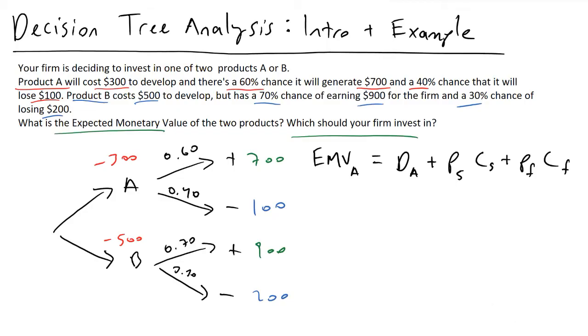If we plug in these numbers, what I'll have is that the development costs of A is going to be minus 300. And then the probability of success for A was 0.6 or 60%. And then the cost of success here was $700. That's positive 700. And then the probability of failure was 0.4, and then the cost of that failure was minus $100, or us losing 100 bucks.